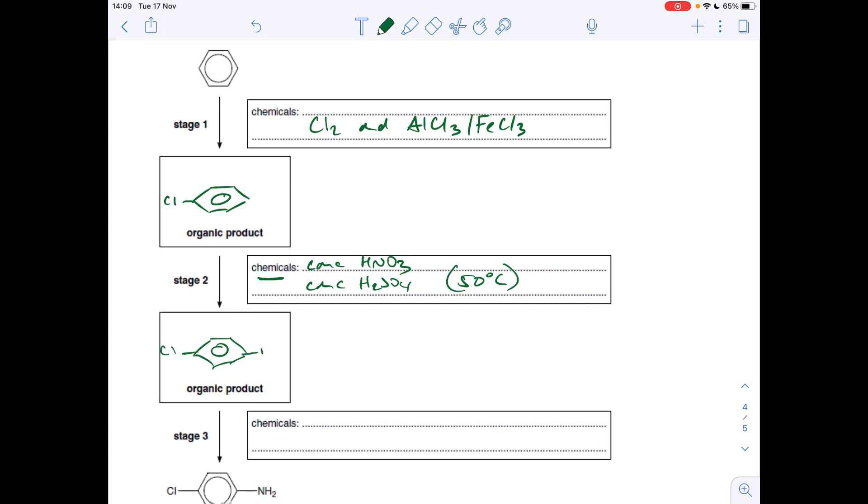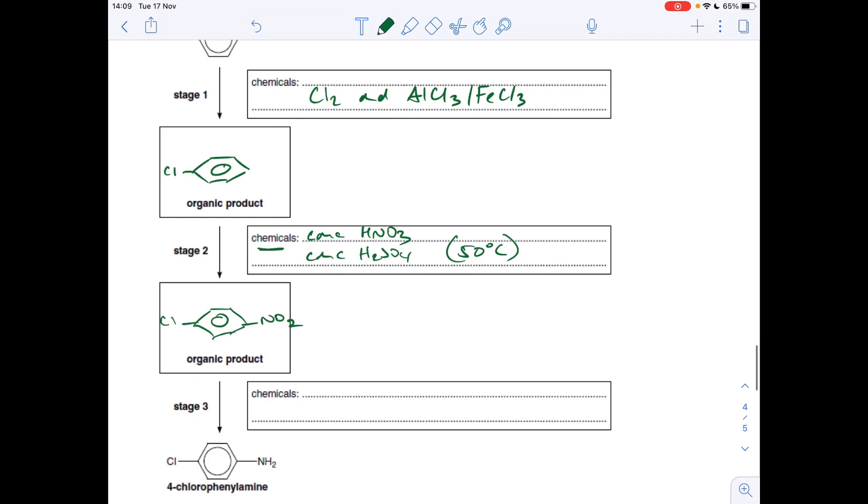So that's going to give us this product here. Sorry, my writing's terrible. So you get that. And then all we've got to do is convert this nitro group into the amino group, and you've just seen that. It's done by reacting with tin and concentrated HCl.